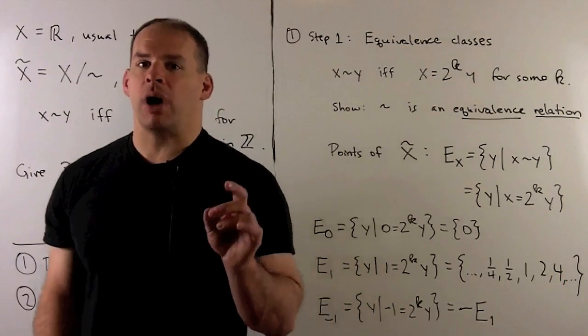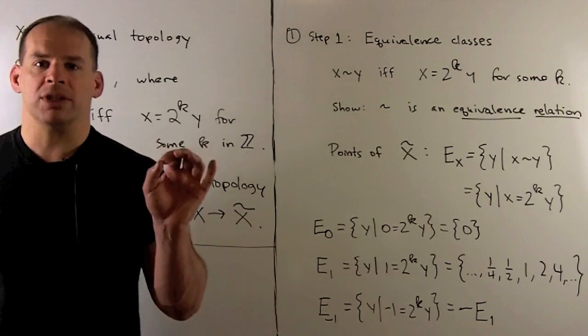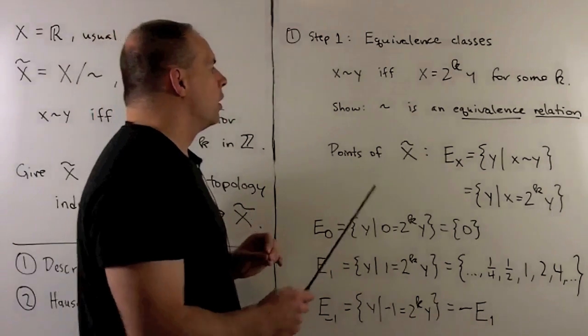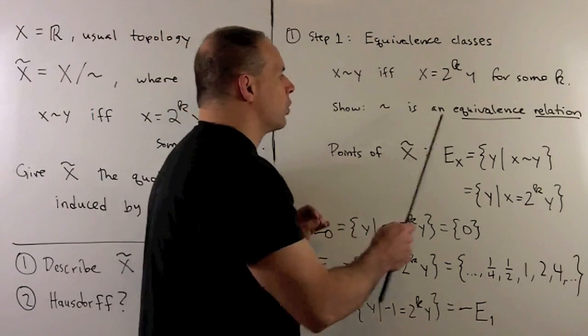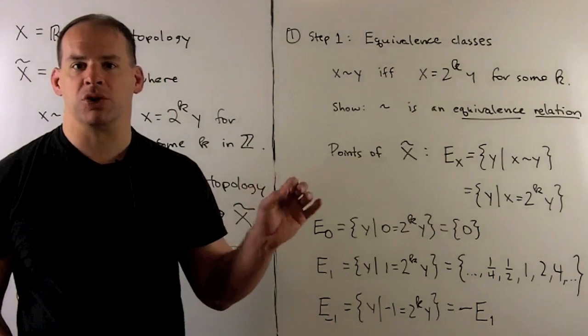We begin by describing the points of x tilde. These are just going to be our equivalence classes for our relation. The first step is we have to show tilde is an equivalence relation, and I'll leave that to you. You have to show reflexive, symmetric, and transitive.